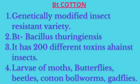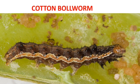It produces 200 different types of toxins against the insects. This bacterial toxin is resistant against insects such as moths, butterflies, beetles, cotton bollworms, and flies, etc.